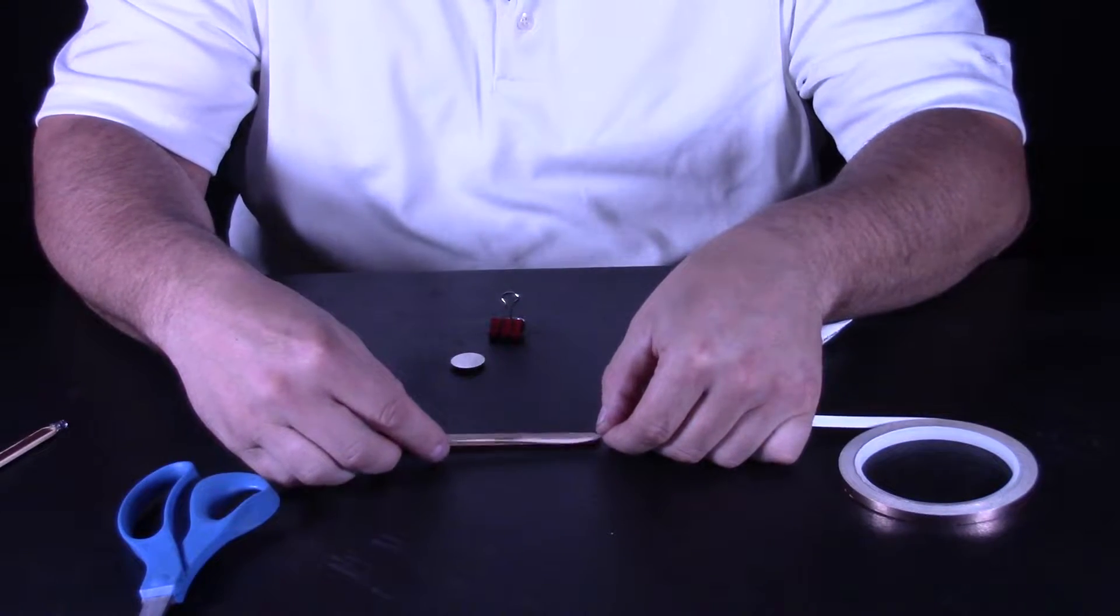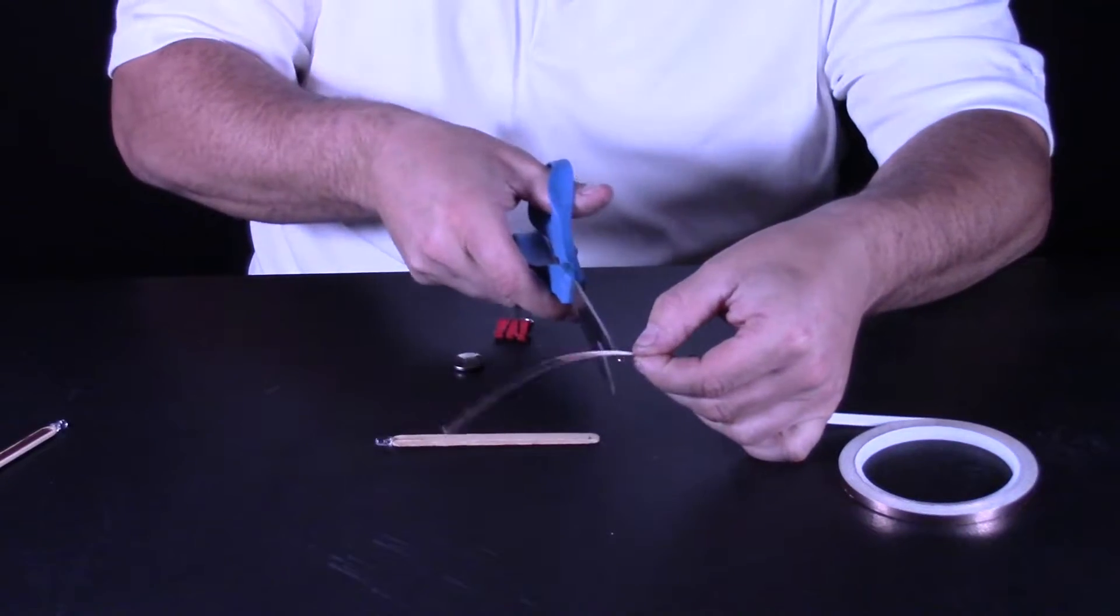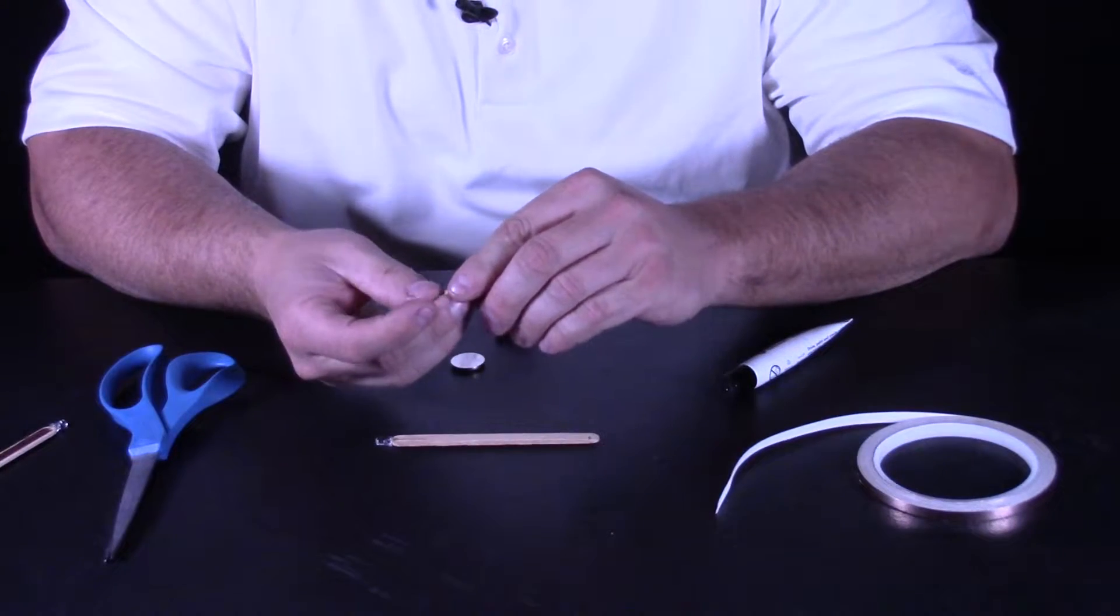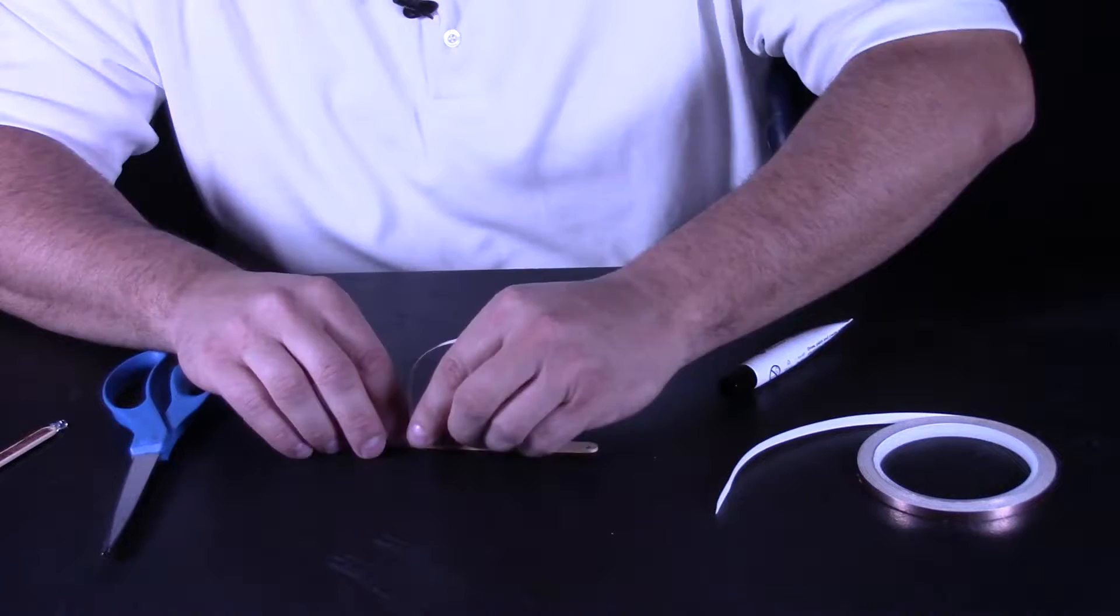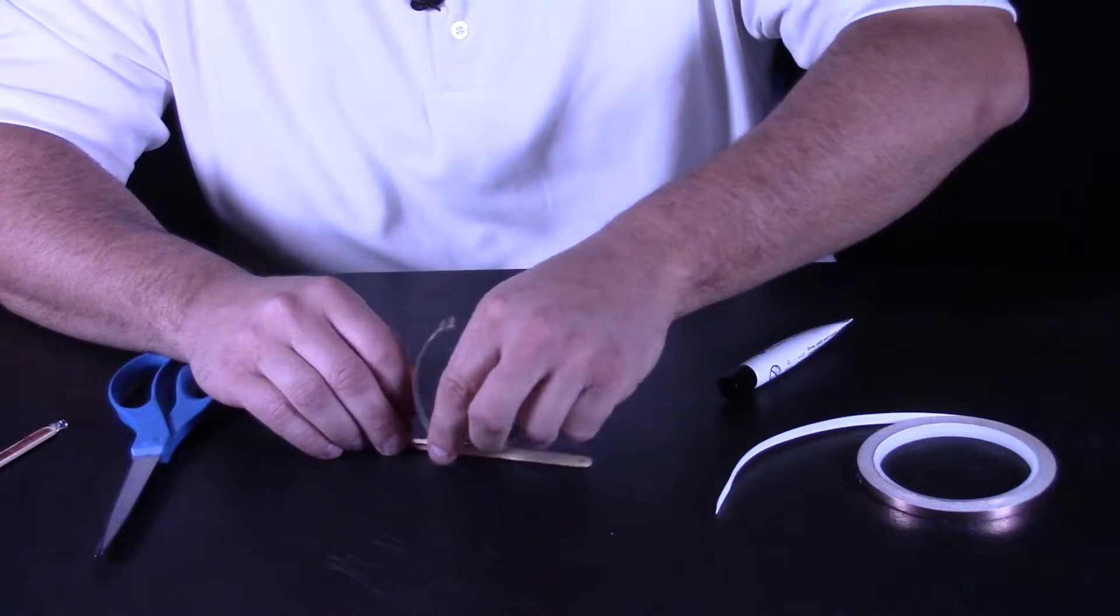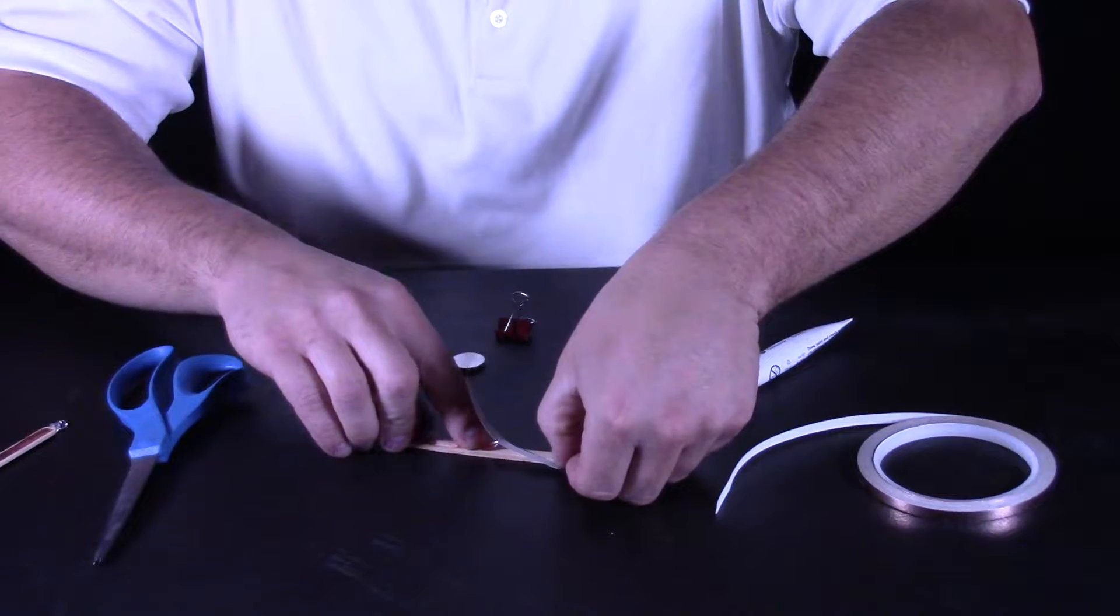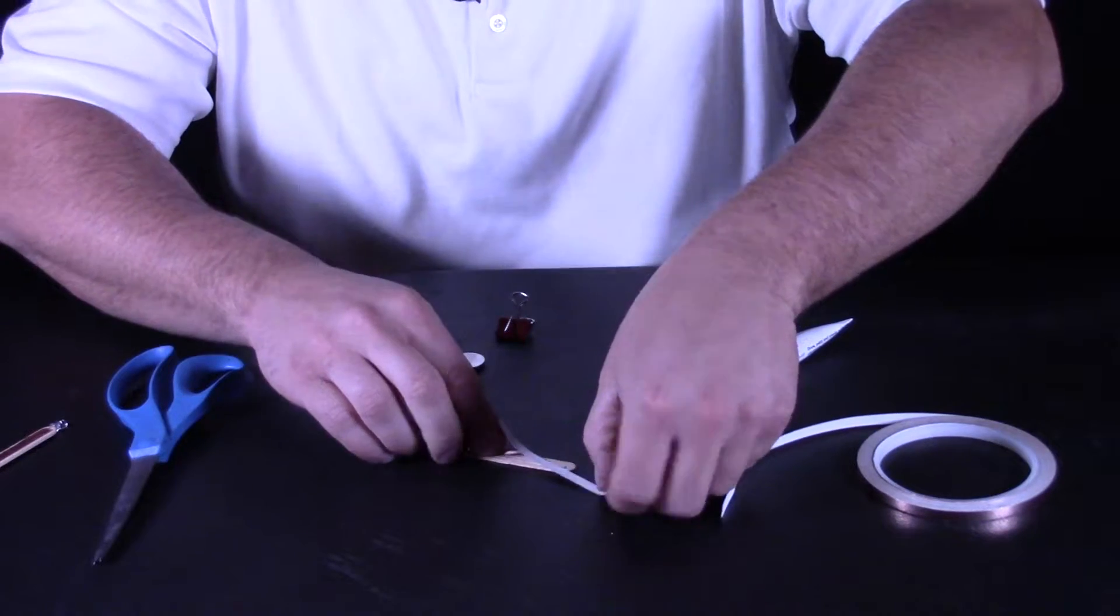Now I'm going to run a piece of tape all the way down to the end of my popsicle stick. Peeling this can be a little bit of a pain, so take your time. Making sure the tape stays straight can be a little tricky. That's why the paint actually is easier to work with.